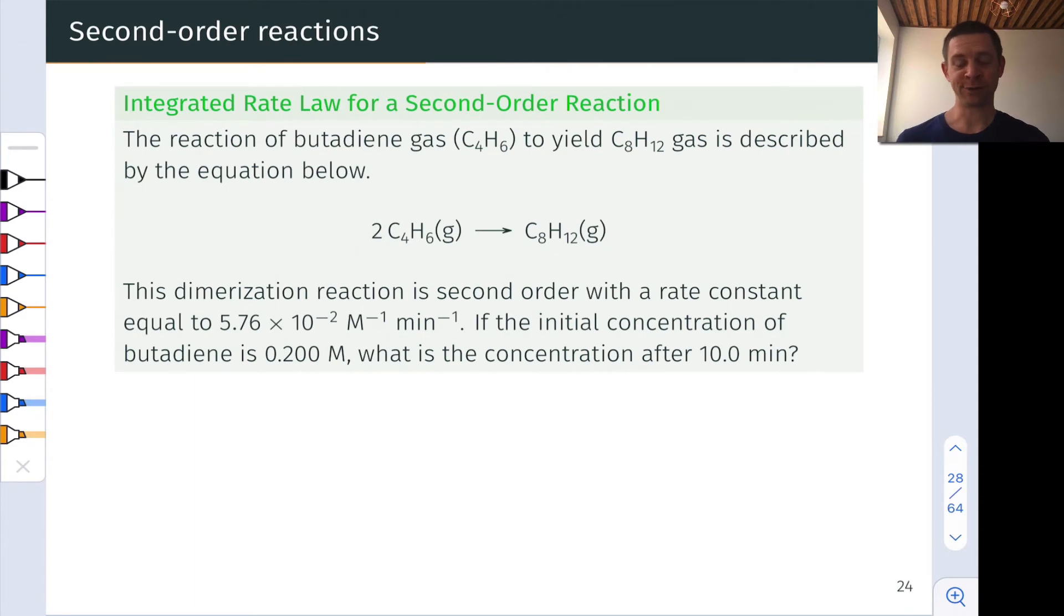In this problem, we're asked about the dimerization reaction of butadiene, C4H6. Here, dimerization refers to the idea that two molecules of butadiene are combining to form a single product or a dimer. This dimerization reaction is second order. So we're going to be applying the second order integrated rate law. We're given the rate constant, just like the other problem. And we know the initial concentration of butadiene. And then we're asked, what is the concentration after 10 minutes? So this is kind of a remix of the first problem, where we're not interested in the time. We're given the time and we're interested in the concentration at that time point, given the initial concentration and the rate constant and the order.